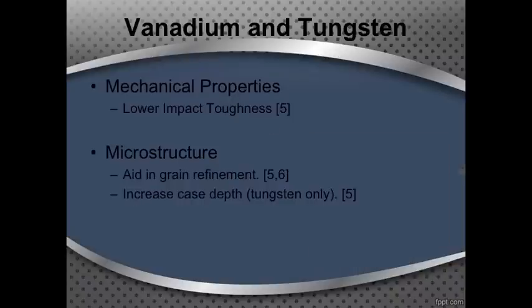Adding vanadium and tungsten to a steel has similar effects on mechanical properties — they both tend to lower the impact toughness, with vanadium doing so a little more than tungsten. Microstructurally, they both aid in the grain refinement process, helping to produce stronger grains, which partly explains the lower impact toughness. In the case of tungsten, it also increases case depth, similar to molybdenum and silicon, helping to carburize the material.